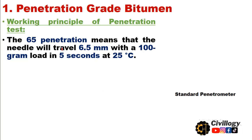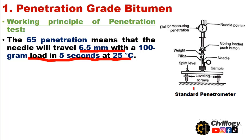A penetration of 65 means the needle will travel 6.5 mm with a 100-gram load in 5 seconds at 25 degrees centigrade. As you can see, this is the standard penetrometer — here is the needle, pointer, and dial for measuring penetration. The weight is 100 grams and a spirit level is used to level the surface. When you release the screw, the needle drops under its own weight and you note the time for 5 seconds at 25 degrees centigrade. If penetration is 6.5 mm, the penetration grade is 65.